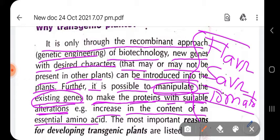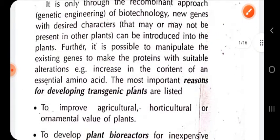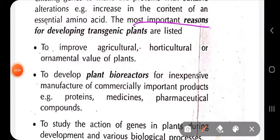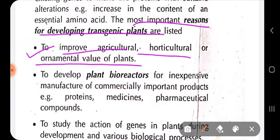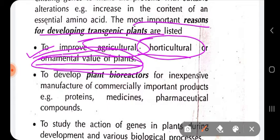We can introduce desirable traits into the plant by introducing genes via vectors or by a direct approach. We are creating transgenic plants — plants having special characteristics gained by inserting genes — first to improve the agricultural, horticultural, or ornamental value of plants. Some plants are used for decoration purposes; those are the ornamental plants.